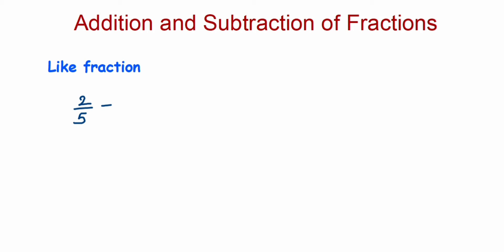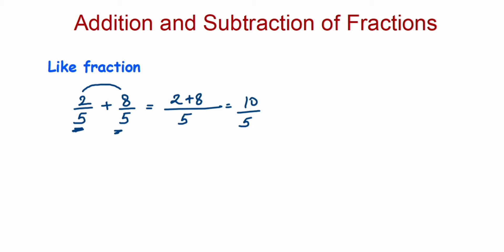Let me take the example of 2/5 plus 8/5. Since the denominators are the same, they are like fractions. Whenever denominators are the same, we just add the numerators — that is 2 plus 8 — and the denominator remains the same. So we get 10/5. Now reduce this to simplest form: 10/5 equals 2.